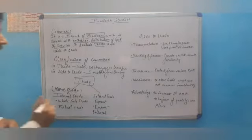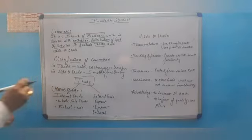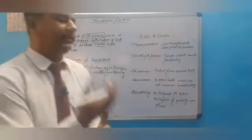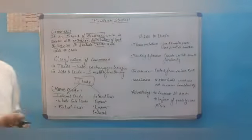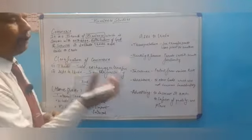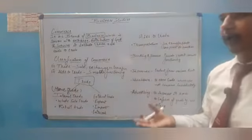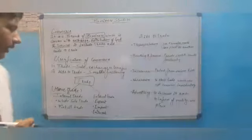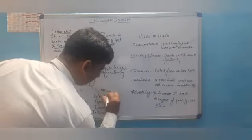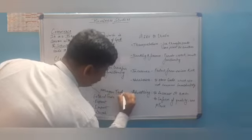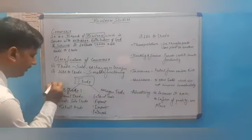Now we will discuss external trade. Internal trade refers to buying and selling within geographical boundaries, whereas in external trade, buying and selling of goods and services takes place outside the geographical boundaries. External trade is also known as foreign trade, and internal trade is also known as domestic trade or home trade.